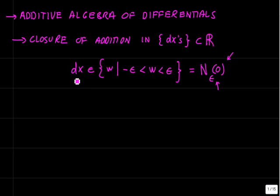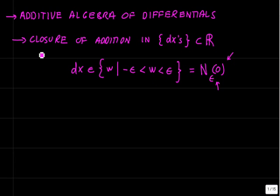We're taking this definition of what a dx is — we're going to say it's an element of this set. Now, if you add a couple of these together, don't you end up with something greater than epsilon? What's going on here? How can you have addition that pops you out of the set where the addition is defined? Is it closed?